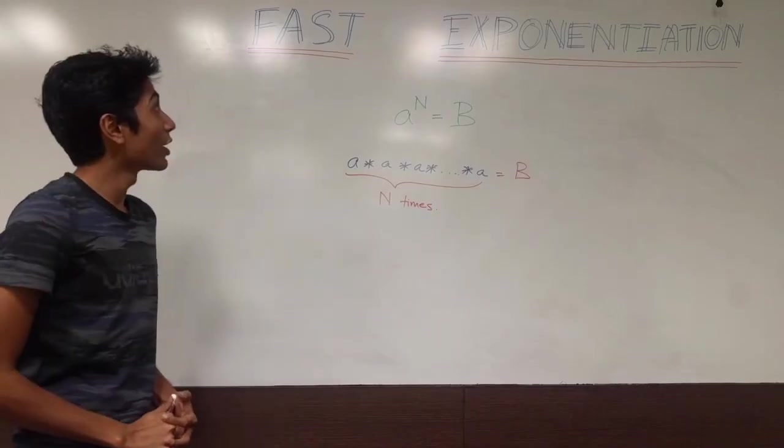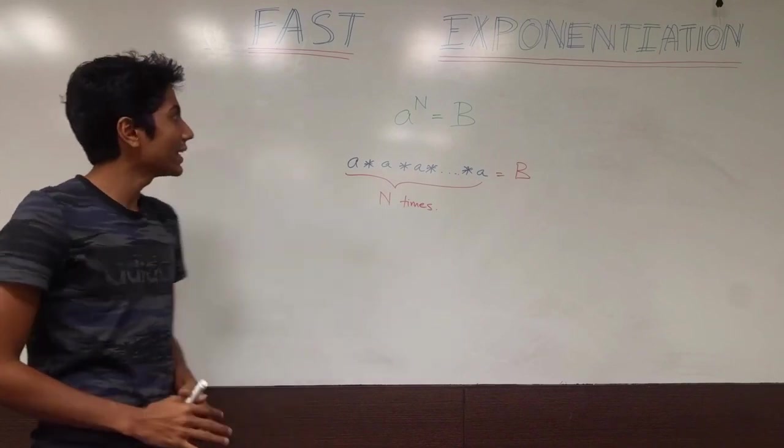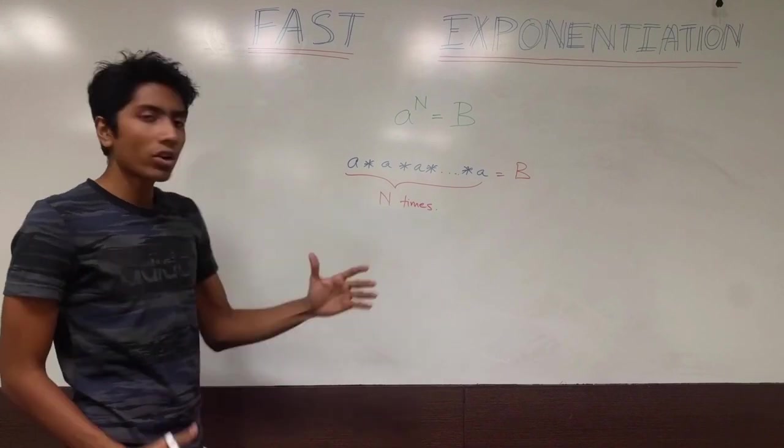Hi guys, this is GKCS. We are talking about fast exponentiation today and specifically what we are trying to say is you have a number a raised to the power n and what you are trying to get is b.